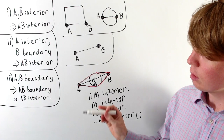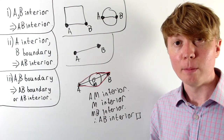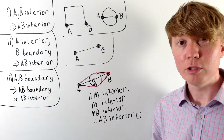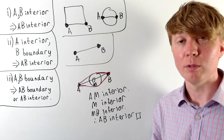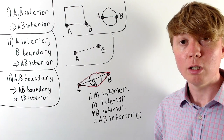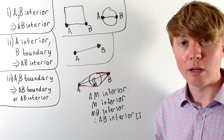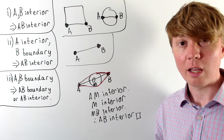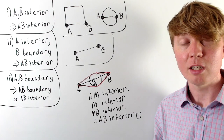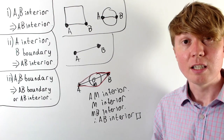To conclude, we've covered all three cases where A and B belong to our convex set. If A and B are both interior points, everything between them on the line segment is an interior point. If one is interior and one is a boundary point, everything between them is still an interior point. And if A and B are both boundary points, there are two possible outcomes: either everything is a boundary point, or everything on the line segment is an interior point.